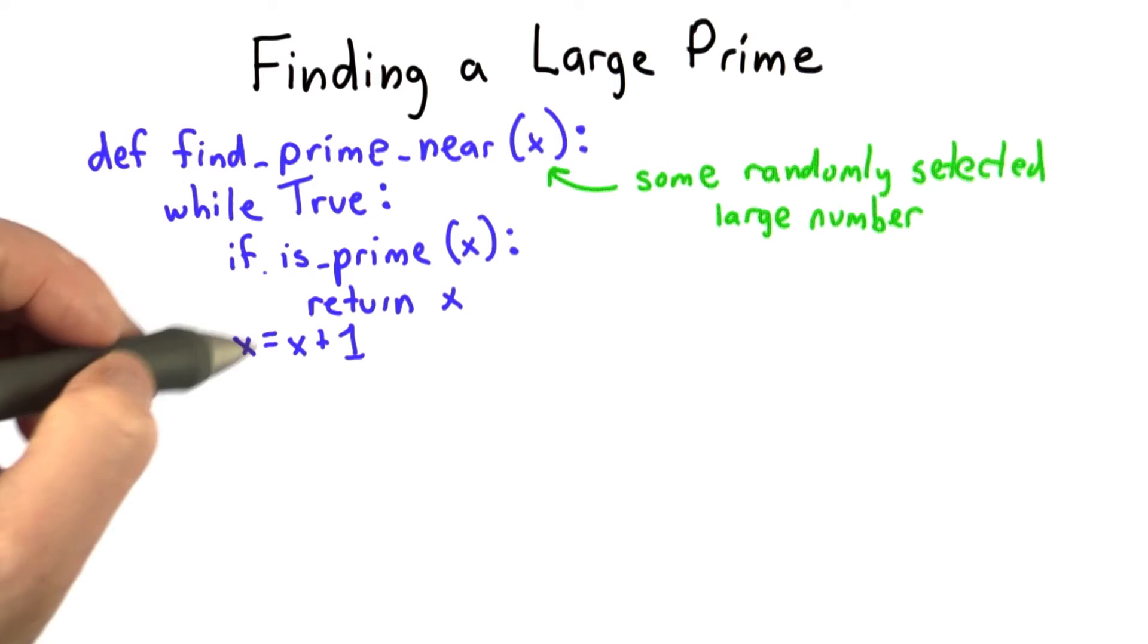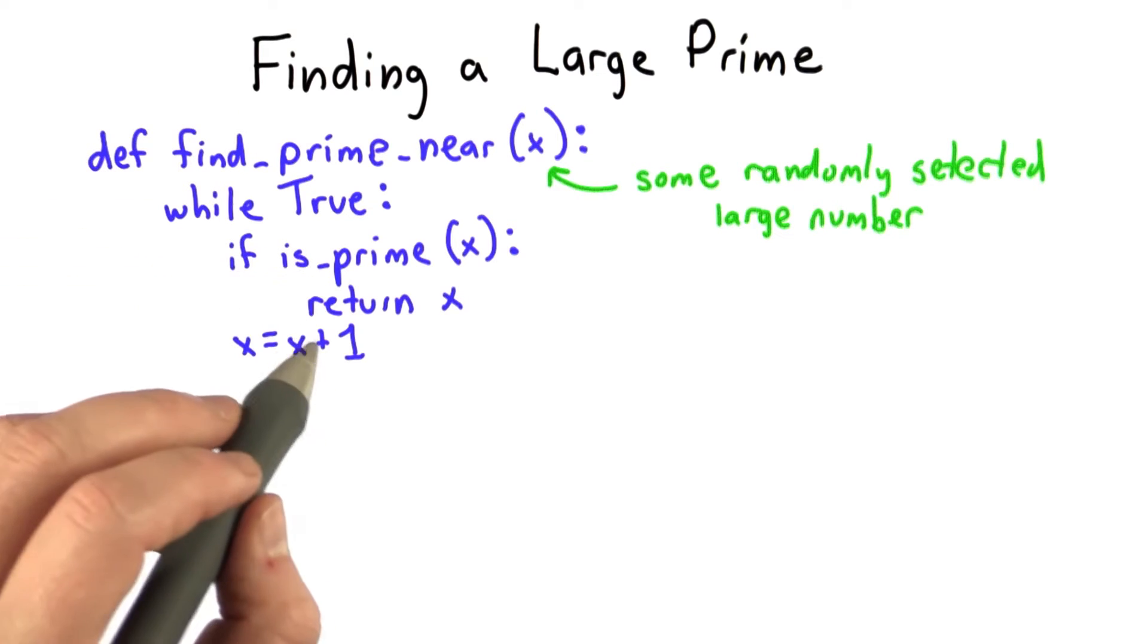Because of what we know about the number of primes being finite and the density of primes, we know that after a reasonable number of iterations, this will actually find a prime and return that value.